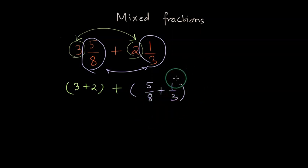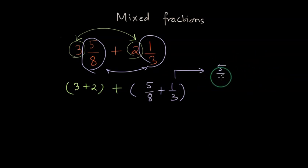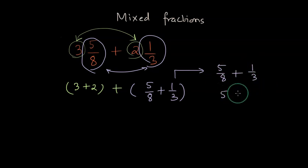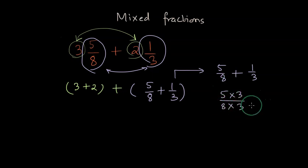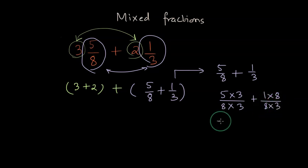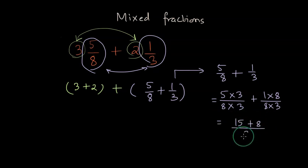Let's do this operation on the right separately. We have 5/8 plus 1/3. If you cross multiply, you get 5 times 3 in the numerator of the first fraction, and then multiply the denominator by 3, plus 1 times 8. In the denominator, we have 8 times 3 again. This is basically 15 plus 8 divided by 24, which equals 23 divided by 24.